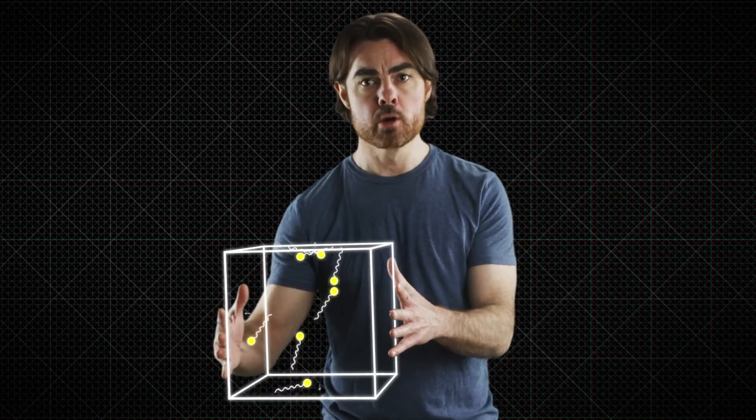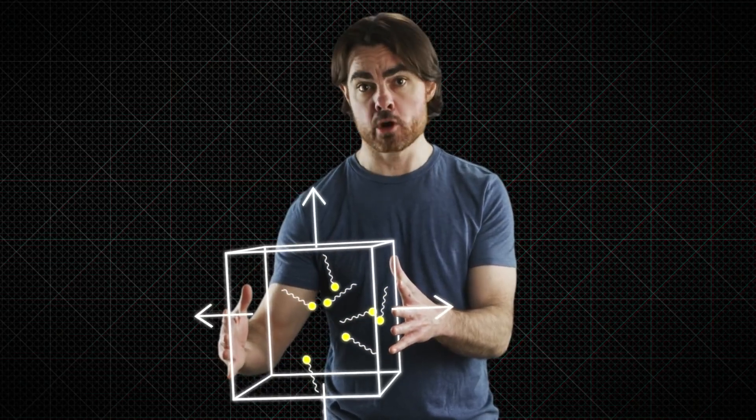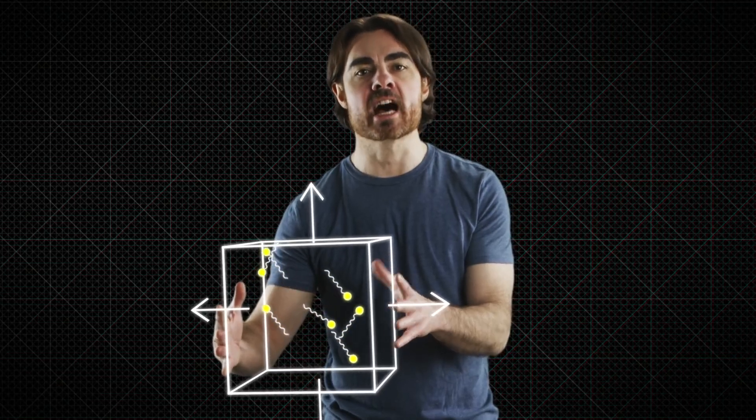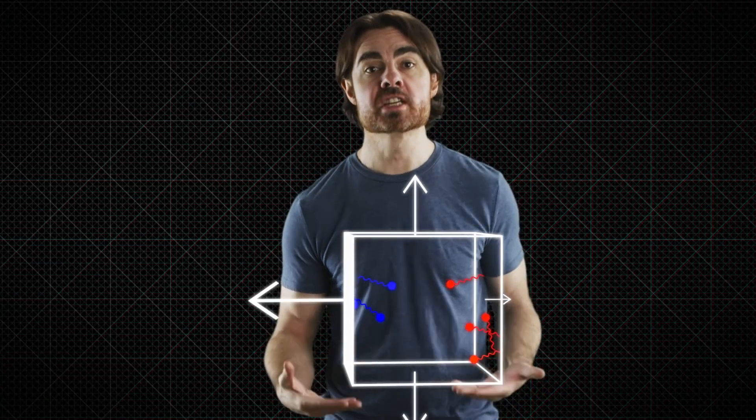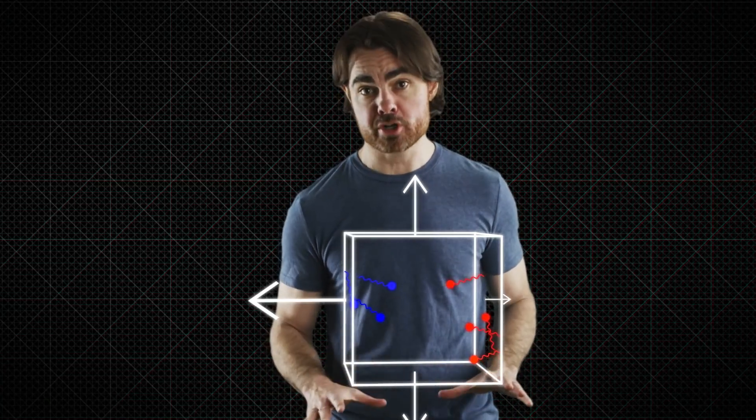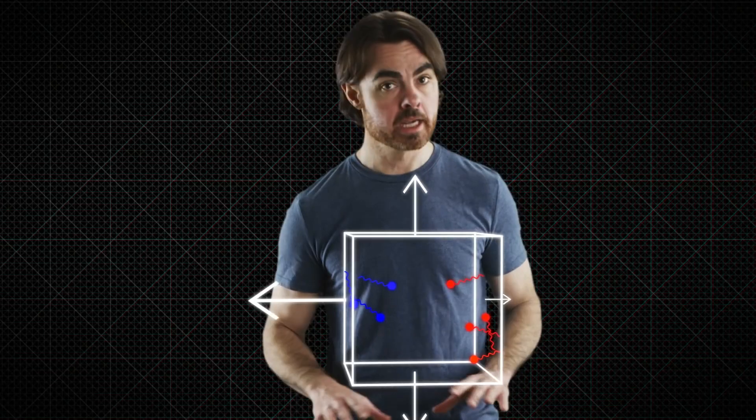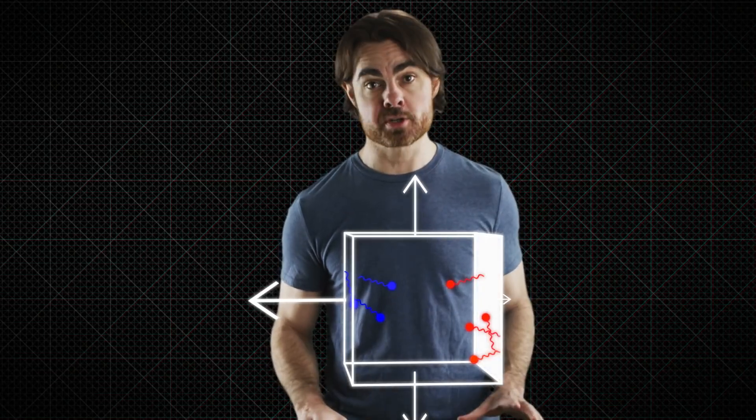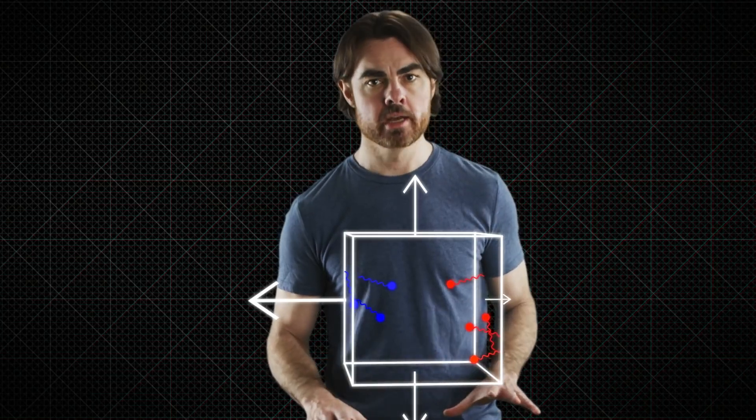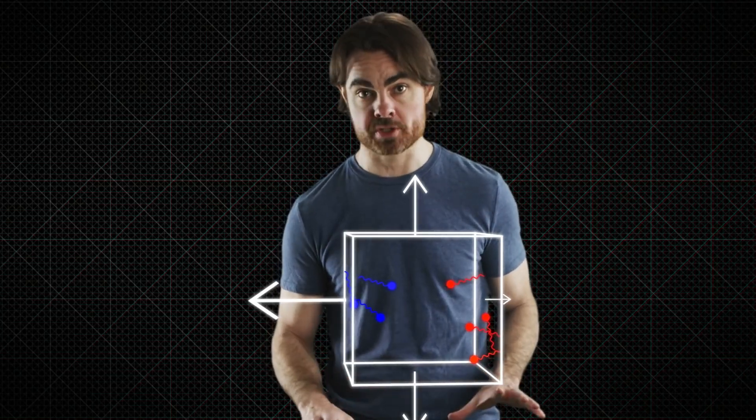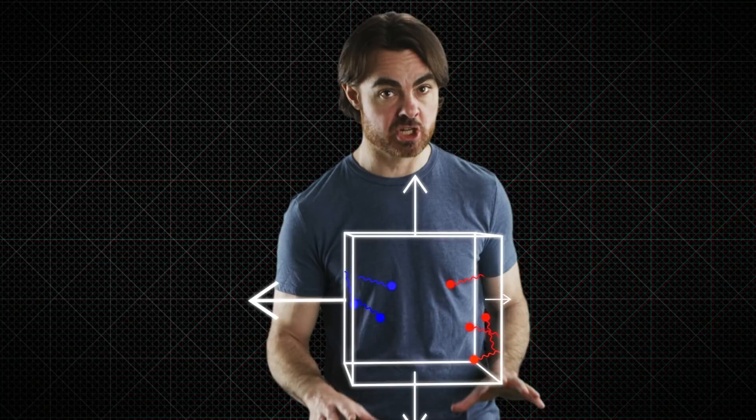All of the walls of the box will feel the same pressure, so there's no overall force on the box. But let's give the box a little nudge, increase its velocity. Now the back wall of the box moves into the incoming photons. It feels a little more pressure from their impact than before. In the meantime, the front of the box, moving away from the incoming photons, feels less pressure.